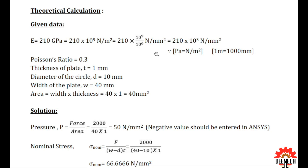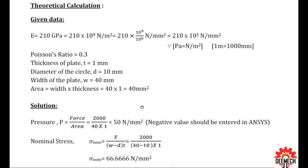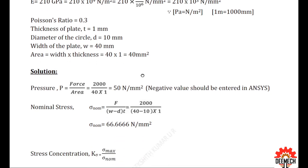Poisson's ratio, thickness of the plate, and diameter of the hole are given. Width of the plate is given. We need to find the area, which is width into thickness — that will be 40 mm square. Then we find pressure, which is force divided by area, giving 50 Newton per mm square. We need to enter a negative value in ANSYS.